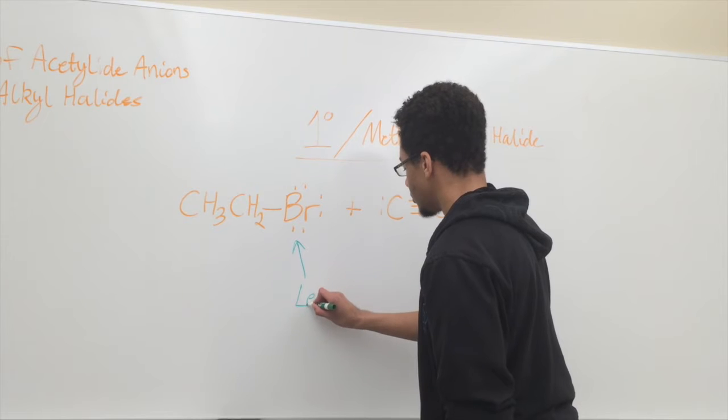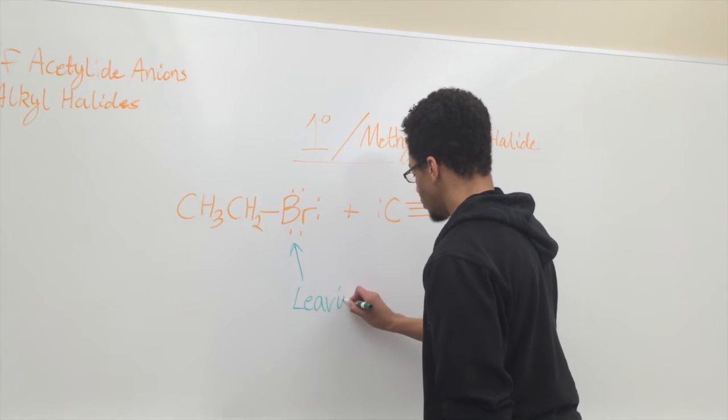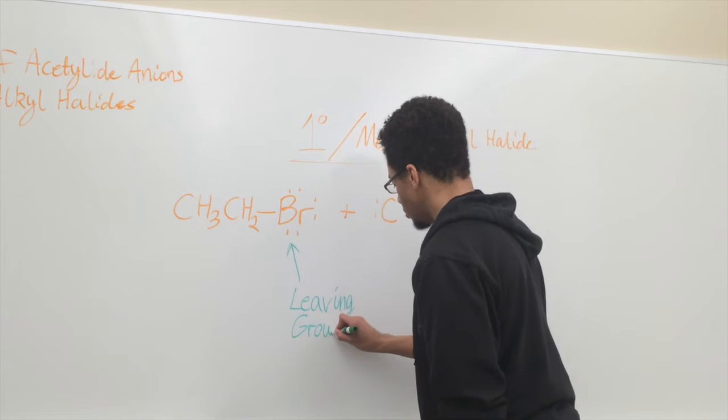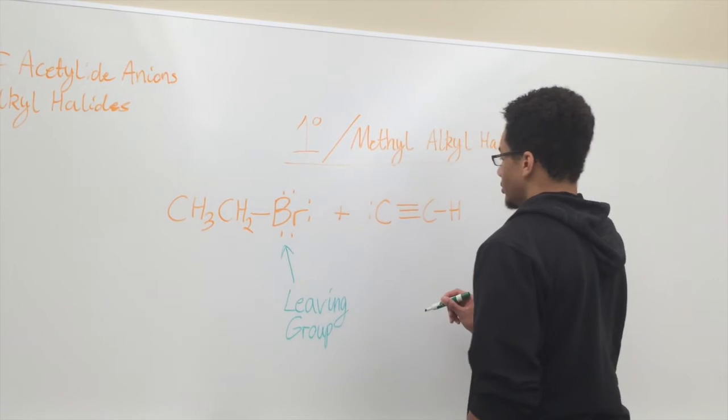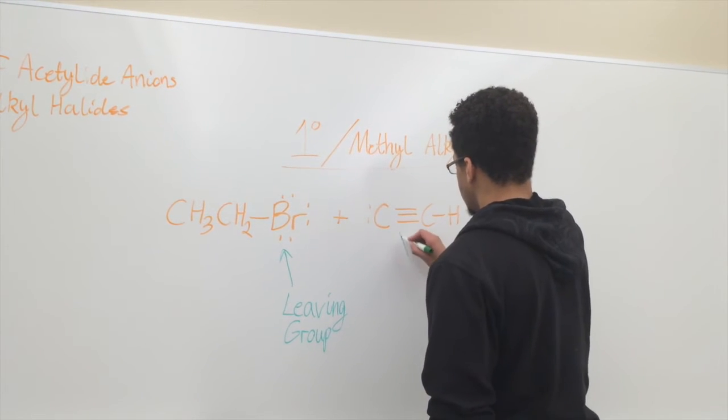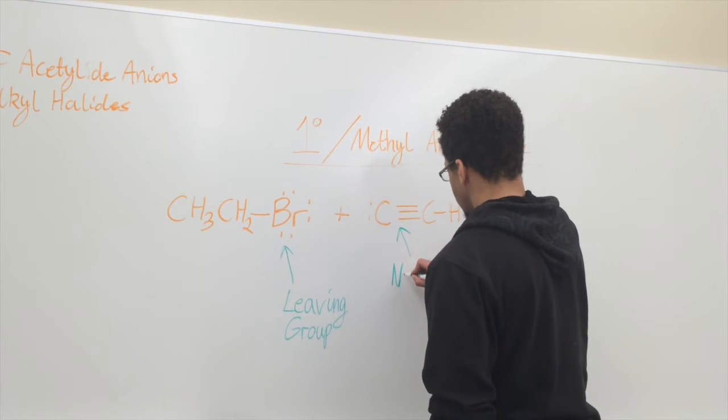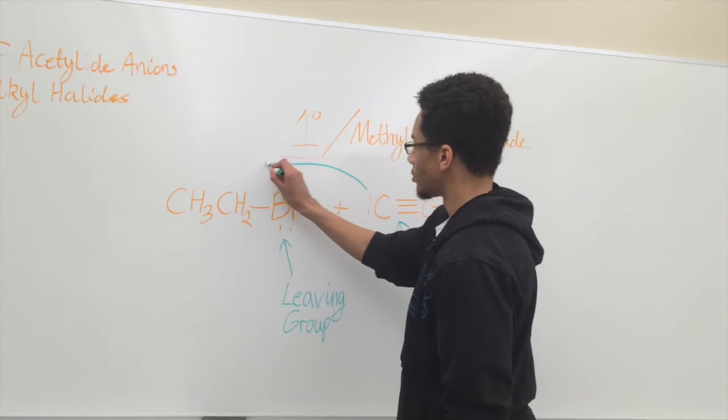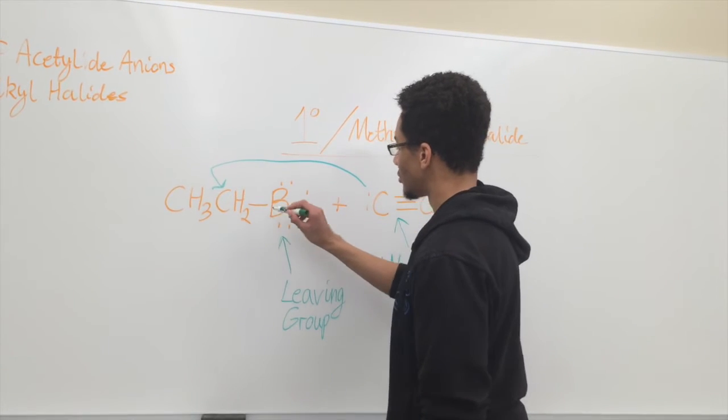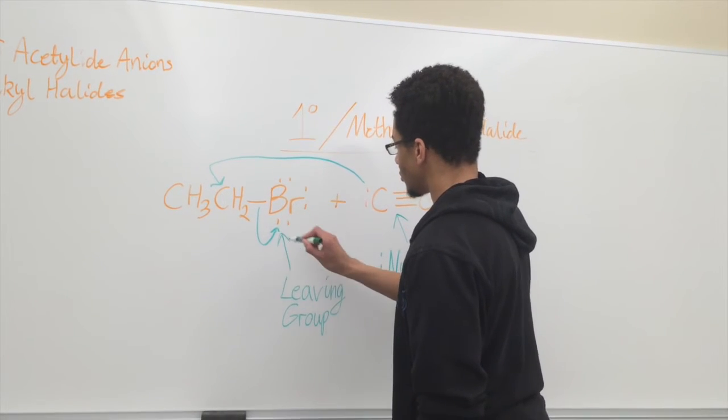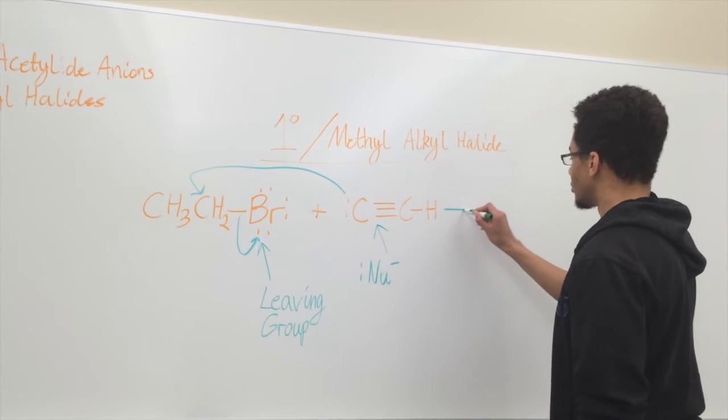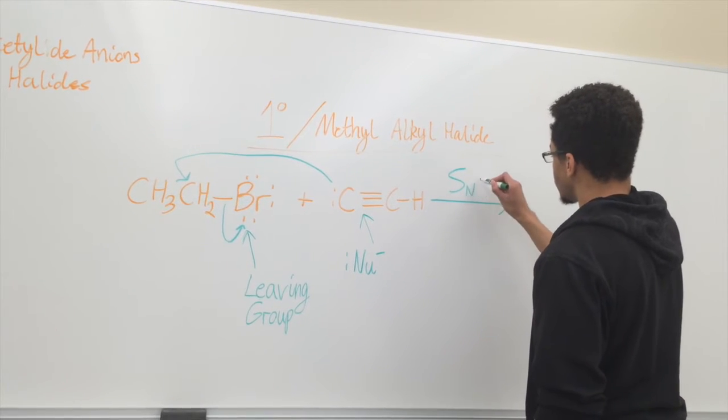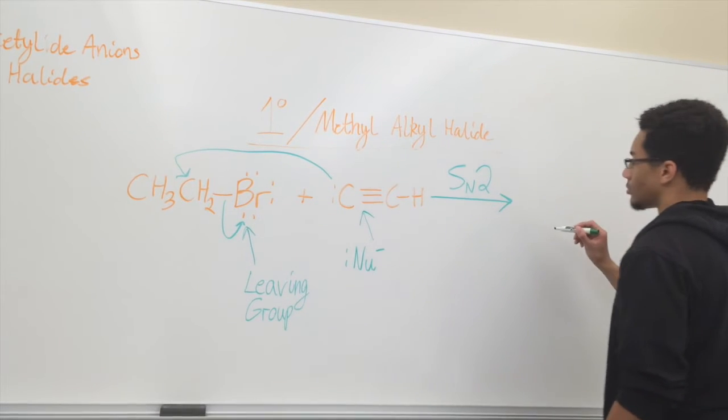We're going to be looking at acetylide anions and their reactions with alkyl halides. This all depends on what type of alkyl halide you have. We're going to be working with primary and methyl alkyl halides. With this primary alkyl halide, the first thing we're going to do is point out the leaving group, and from there, we have our nucleophile, which will be the acetylide anion. And that will come and actually attach itself to the primary alkyl halide, and the leaving group will come off, forming a quick SN2 reaction.